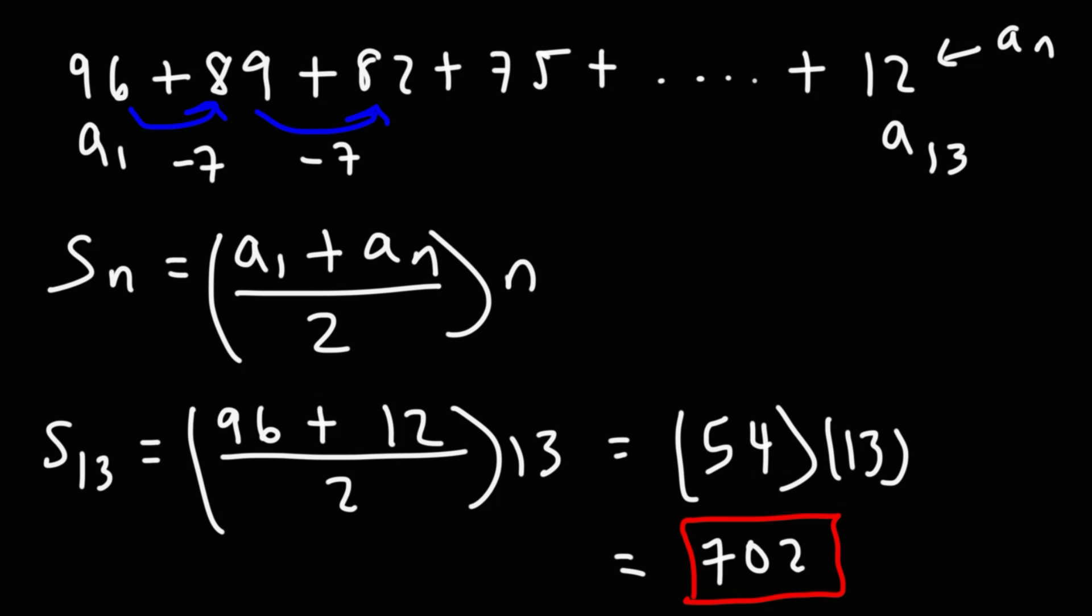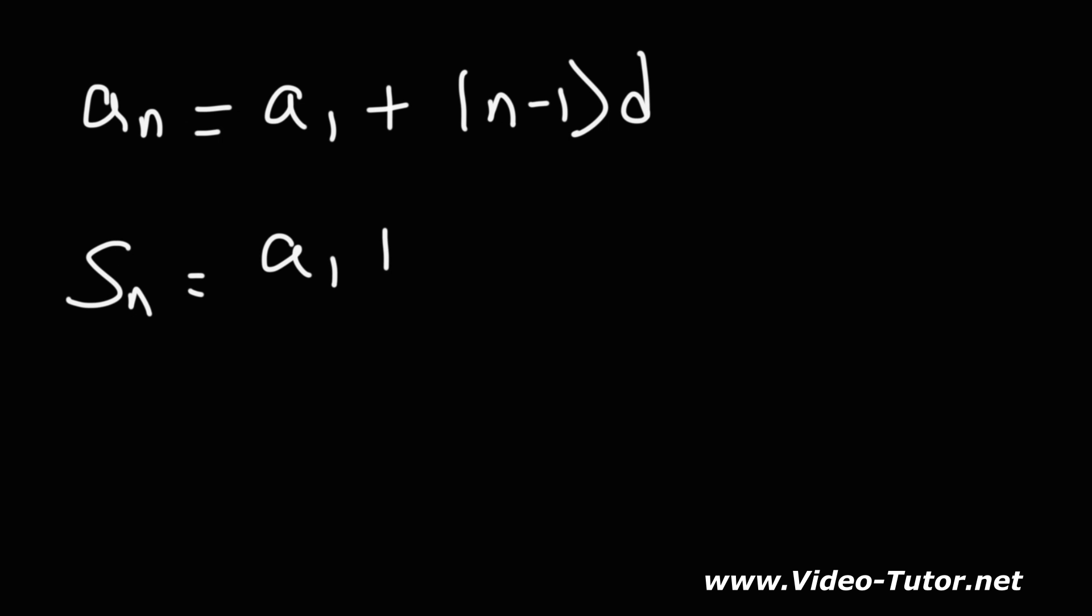So, that's all you need to do in order to calculate the sum of an arithmetic sequence or rather an arithmetic series. So remember, the first thing you need to do is just to review, use this formula to calculate n, the number of terms. Once you find n, you can plug everything into this equation to get the sum of the series.